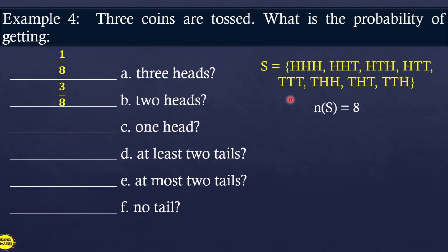What is the probability of getting exactly 1 head? Counting outcomes with only 1 head in the sample space, there are 3 such outcomes. Therefore, probability = 3 over 8.